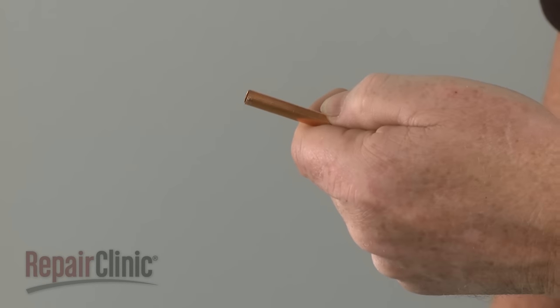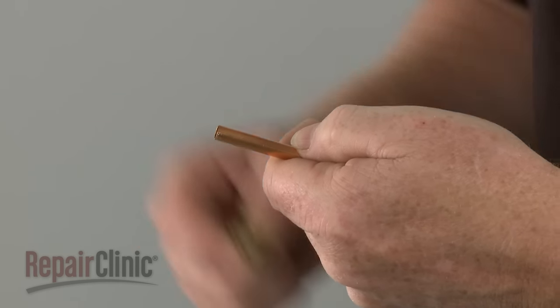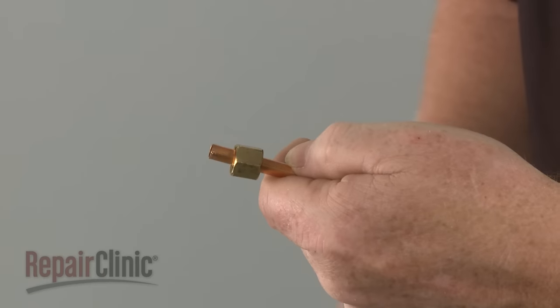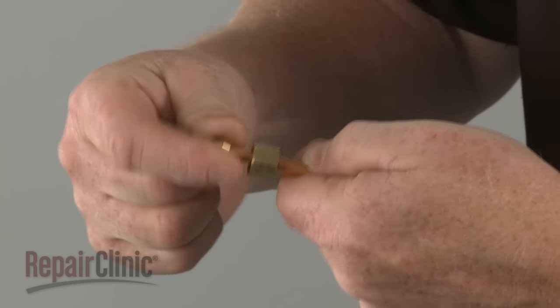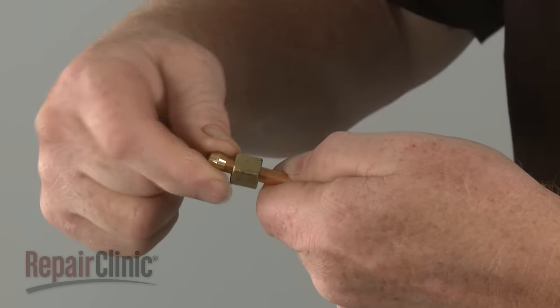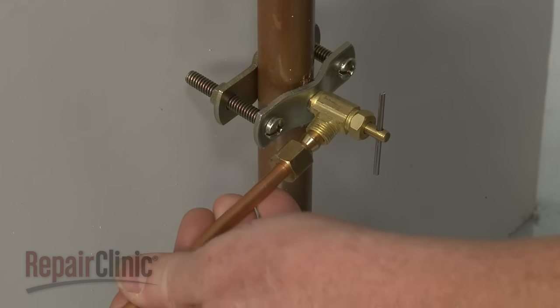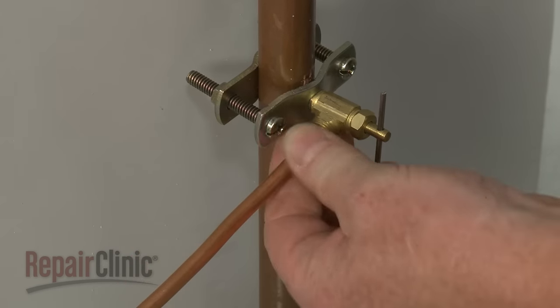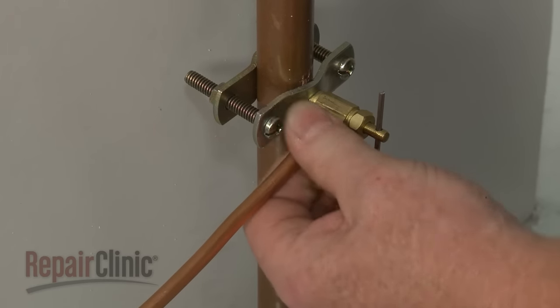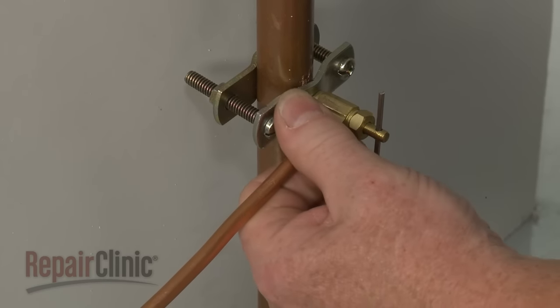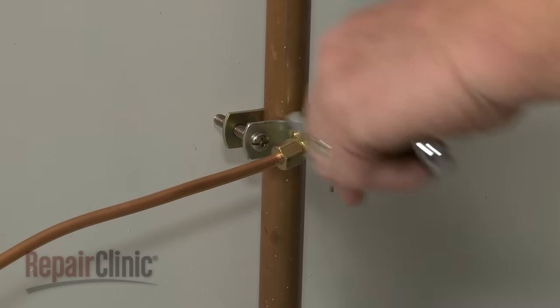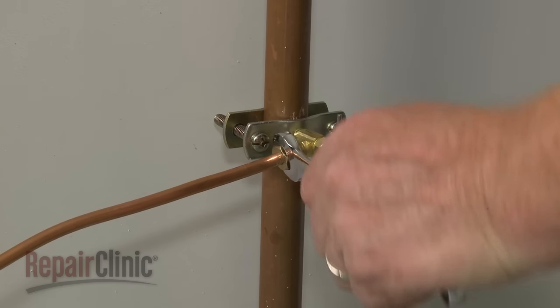After ensuring the end of the copper tubing is cut evenly and cleanly, slide on a compression nut and a compression sleeve. Now fully insert the tubing into the outlet connector on the shut-off valve. Thread and hand-tighten the compression nut. Use a wrench to tighten the nut one additional turn.